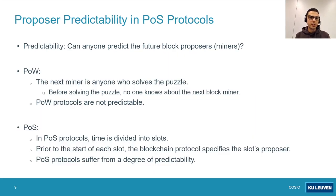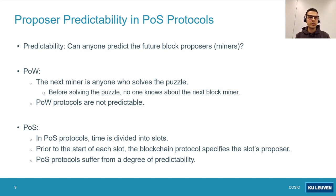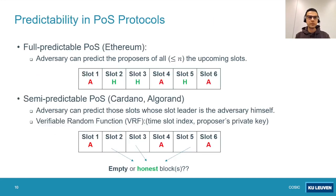Now let's see the effect of predictability on the selfish proposing attack. By predictability, we mean whether anyone can predict future block proposers. One advantage of proof-of-work protocols is that they are not predictable — the next miner is whoever solves the puzzle, and no one knows who that will be beforehand. But proof-of-stake protocols suffer from a degree of predictability because time is divided into slots and an algorithm assigns a proposer to each slot, whose output can often be determined well in advance.